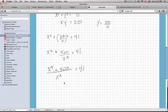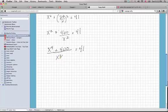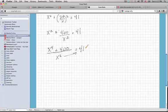And still equal to 41. I really don't want this denominator of x squared, so what I'm going to do is, since these both share the same denominator, I'm just going to cross multiply to get the equation x to the fourth plus 400 is equal to 41x squared.